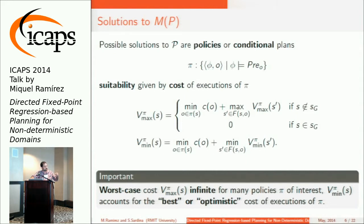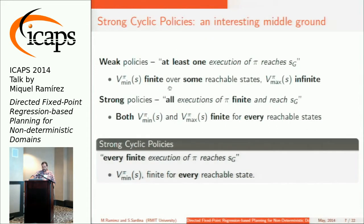Interestingly, while the worst-case Bellman equation has no solution for many policies of interest, we can still identify these policies using the min-min relaxation. Taking the values of the Bellman equations, we can categorize solutions into three categories. Weak policies: at least one execution reaches the goal, where the min-min relaxation is finite over some reachable states but the worst-case equation is infinite. Strong policies: all executions are finite and reach the goal, where both the min-min relaxation and worst-case equation are finite for every reachable state.